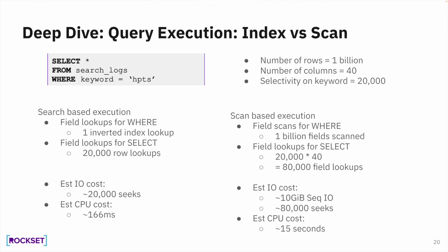Here's an example query — select star where keyword equals HPTS. On the left side, I measured the CPU needed to serve the query using an index. On the right side, the CPU needed using a scan. The scan takes 15 seconds of compute, whereas indexing takes a few hundred milliseconds of compute. That's a great difference. This makes your machine learning infra far more efficient if you use the right technology for the right queries.